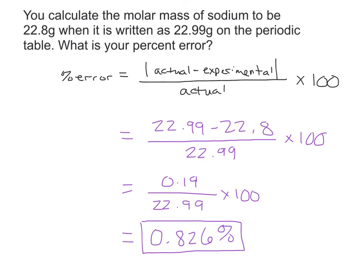It depends on the person, it depends on the experiment or the level of chemistry you take. But generally, less than 5% error is ideal.